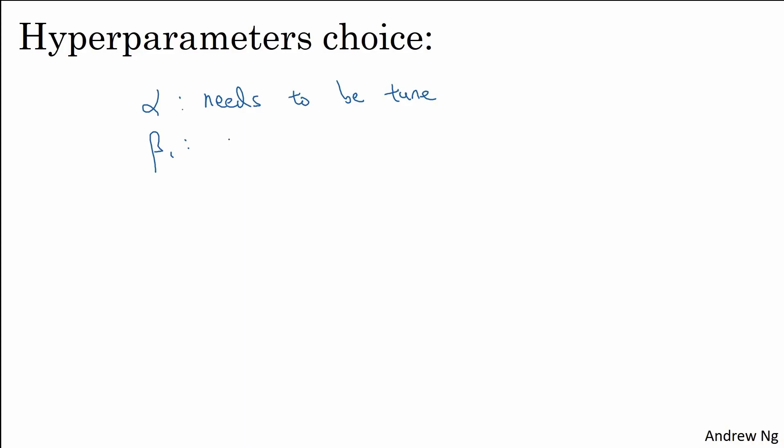A common choice, really the default choice for beta 1, is 0.9. So this is the moving average, weighted average of DW, right? This is the momentum-like term. The hyperparameter for beta 2, the authors of the Adam paper, inventors of the Adam algorithm recommend 0.999. Again, this is computing the moving weighted average of DW squared as well as DB squared. And then epsilon, the choice of epsilon doesn't matter very much. But the authors of the Adam paper recommended 10 to the minus 8. But this parameter, you really don't need to set it, and it doesn't affect performance much at all.